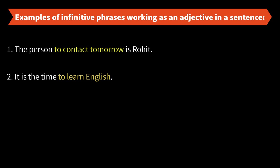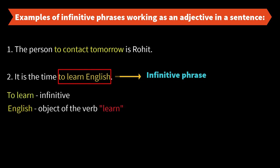It is the time to learn English. Here 'to learn English' is the infinitive phrase giving information about the noun 'time' — modifying the noun 'time.' 'To learn' is the infinitive and 'English' is the object of the verb 'learn.' This complete phrase 'to learn English' is modifying the noun 'time.' Which time are we talking about? It is the time to learn English.